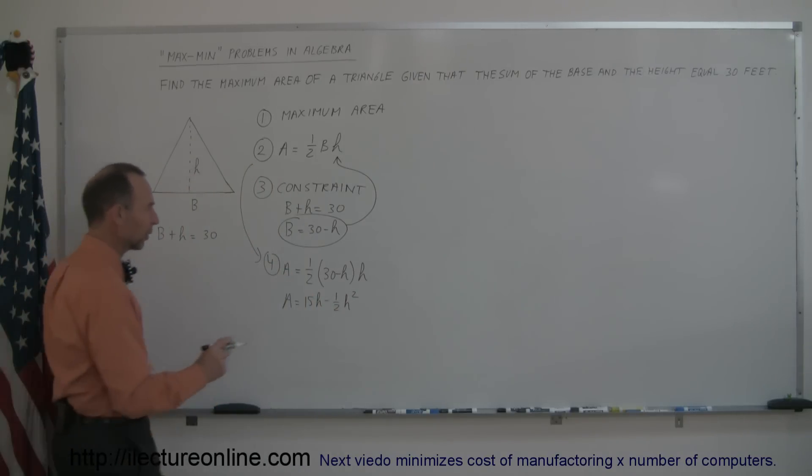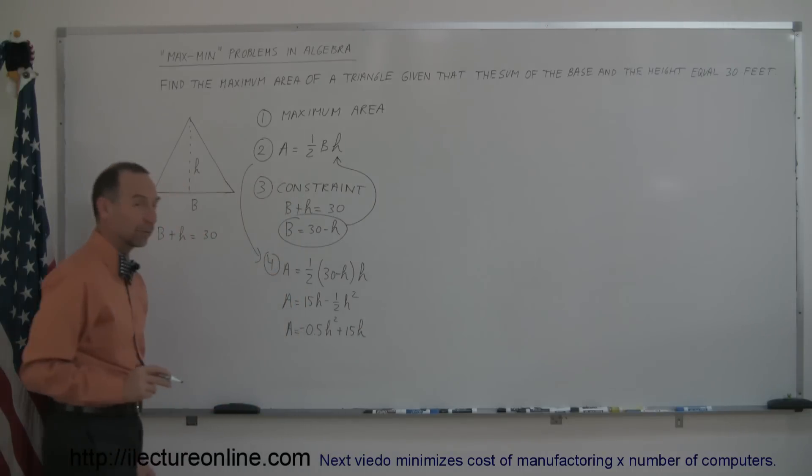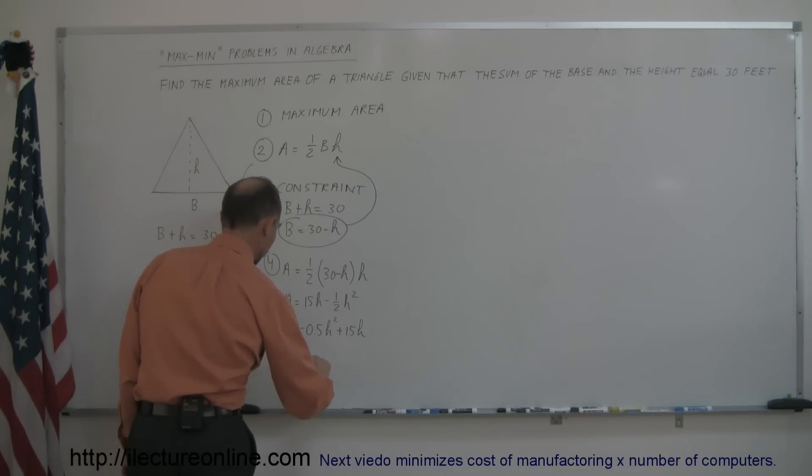And if I rearrange that equation with the square term first, we got A is equal to negative 0.5 h squared plus 15h. And of course the general equation, the general quadratic equation would be A equals ah squared plus bh plus c.